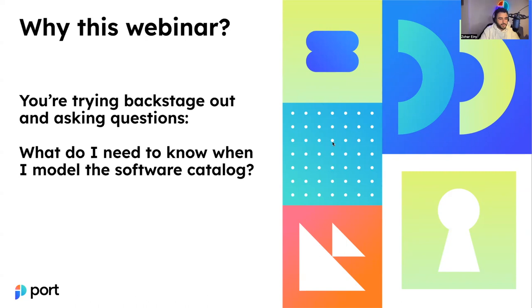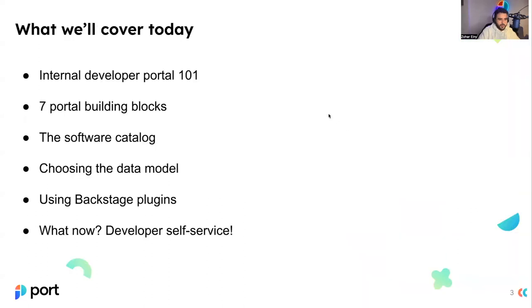So essentially, if you're hearing this webinar and you tried out Backstage and you have a bunch of questions, I'm going to shed light today about what should be taken into account while you're modeling the software catalog that needs to represent your way of work and architecture. In this webinar, we will cover both an introduction to IDPs, the seven pillars that need to be included as part of the IDP, we'll focus on the software catalog, how to choose the right model for it, how to bring data into the catalog from various sources, how you can use Backstage plugins to do that, and what's next for IDP — including self-service for developers.